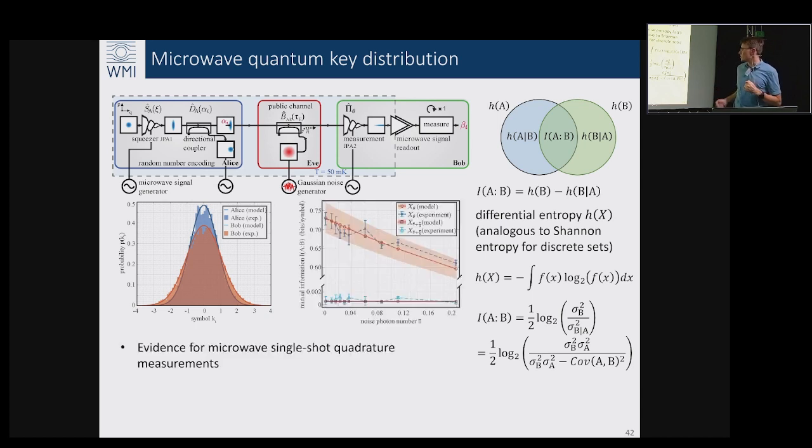By measuring for example the P or Q quadrature, here we observe very strong evidence for the microwave single shot quadrature measurement because we see a lot of information extracted from one quadrature and we see that in the mutual information corresponding to the measurement on the conjugate quadrature is effectively zero within the error bars, which was very important for us.